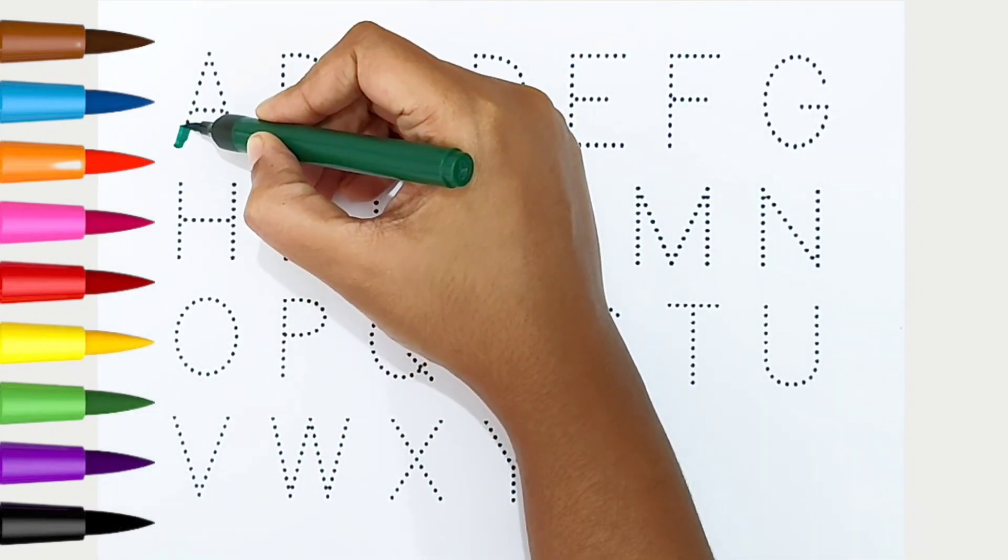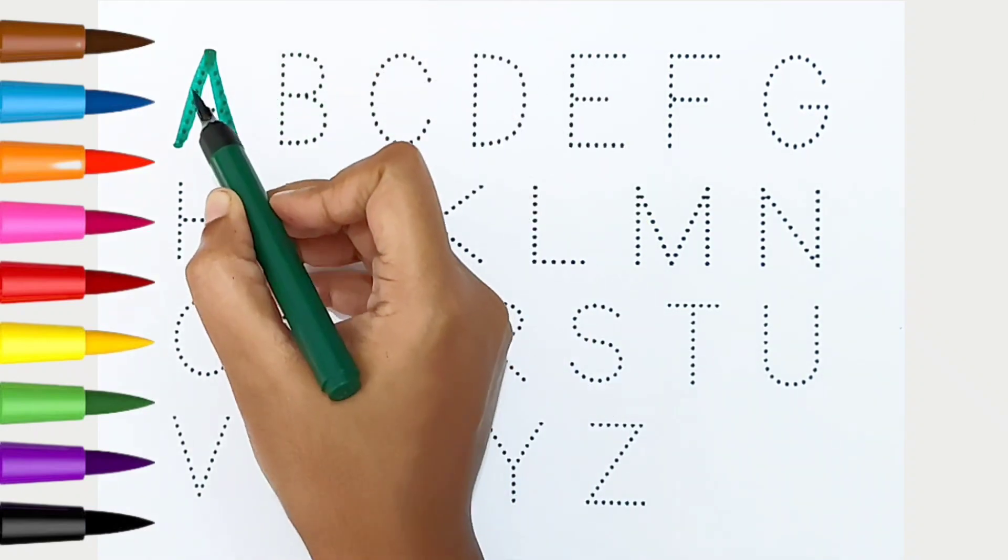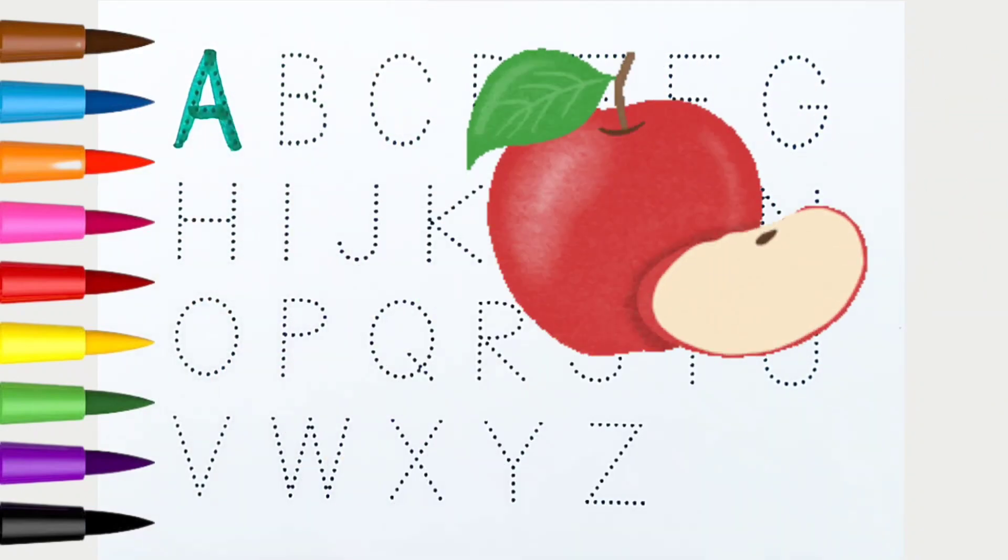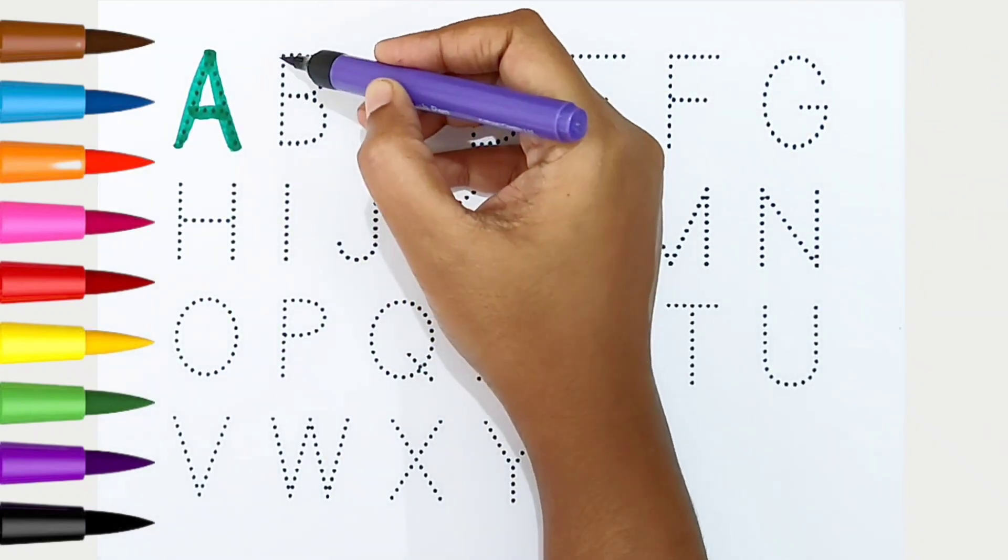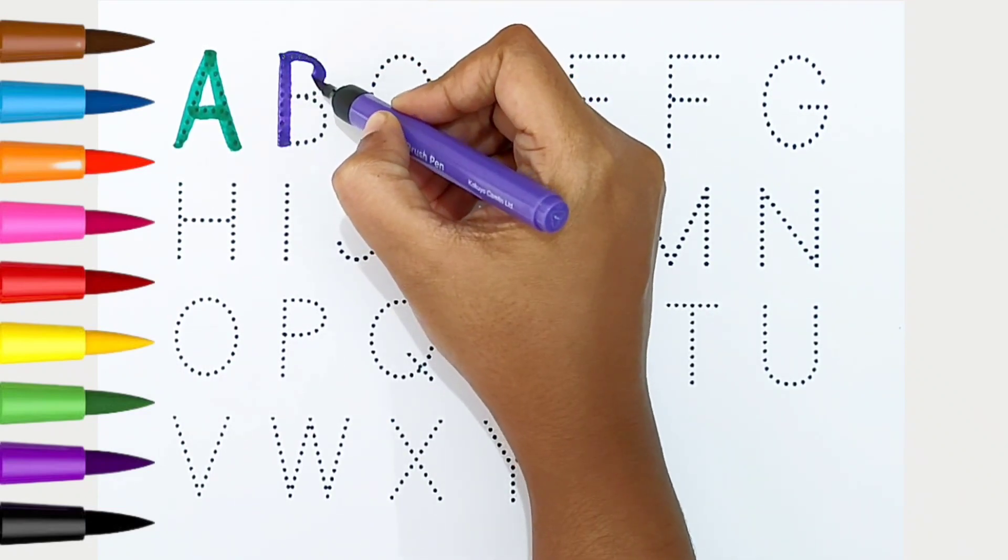A, dark green color. A is for apple. B, violet color. B is for bat.